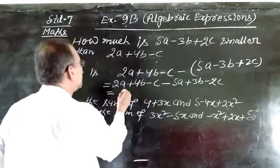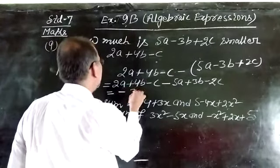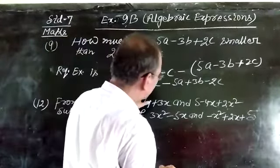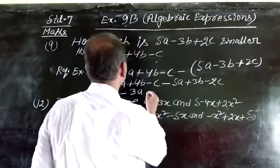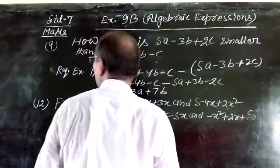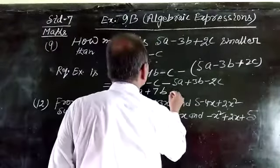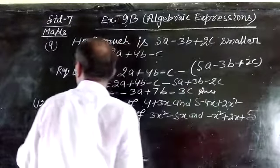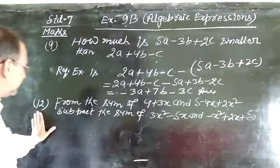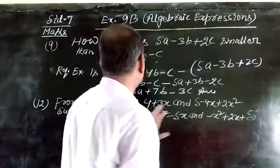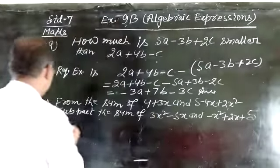This is equal to 2a plus 4b plus 3b minus 2c small. This is equal to minus 3a, 4b plus 3b is equal to 7b minus 2c small. This is equal to minus 3a plus 7b minus 2c.